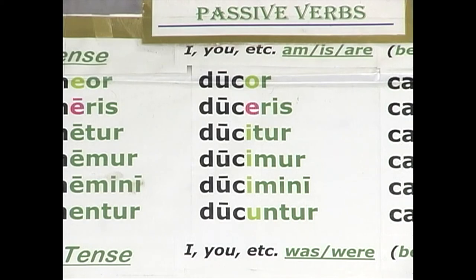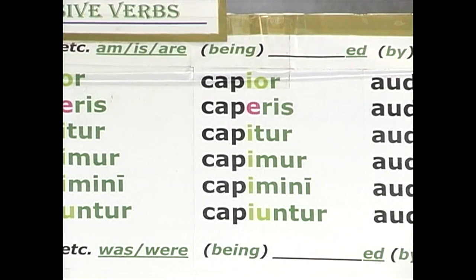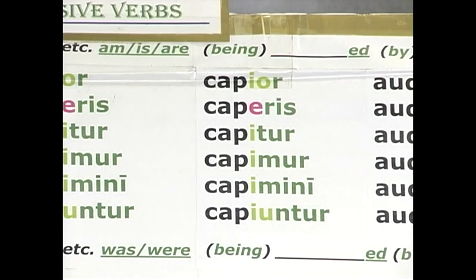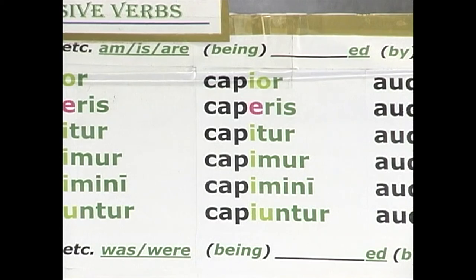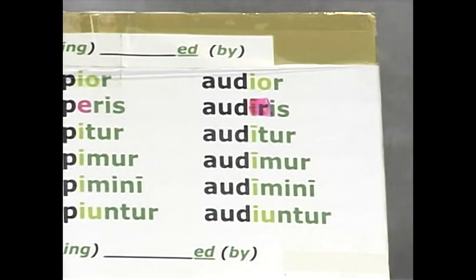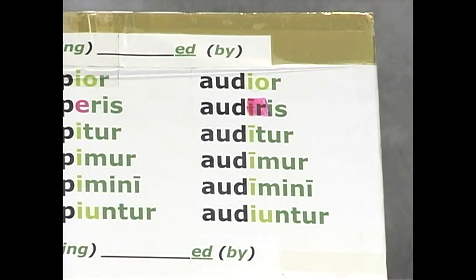Third conjugation io: capior, caperis, capitur, capimur, capimini, capiuntur — I am being captured, you are being captured, he is being captured, we, you plural, they are being captured. The subject is being acted upon. And fourth conjugation: audior, audiris, auditur, audimur, audimini, audiuntur — I am being heard, you are being heard, he is being heard, we, you plural, they are being heard.